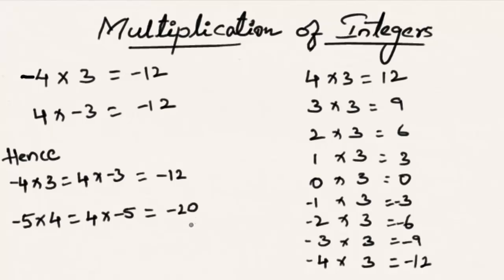Each time we multiply a positive integer with a negative integer, the product is a negative integer. In these cases we get products of minus 20 and minus 12, as also observed in the pattern on the right side. From these examples, the product of a positive integer and a negative integer is always a negative integer. Hope you understood the concept — do like and subscribe to vteachacademy.com. Thanks for watching, have a nice day!